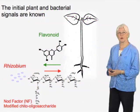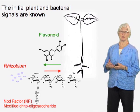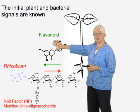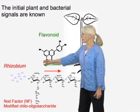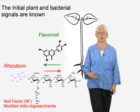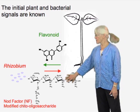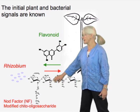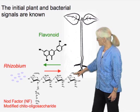Here's a review of the basic idea of signal exchange in the early phases of nodulation. The plant secretes a flavonoid signal. This flavonoid acts as a trigger in the bacterium, causing the transcription of genes called nod genes, which encode enzymes.